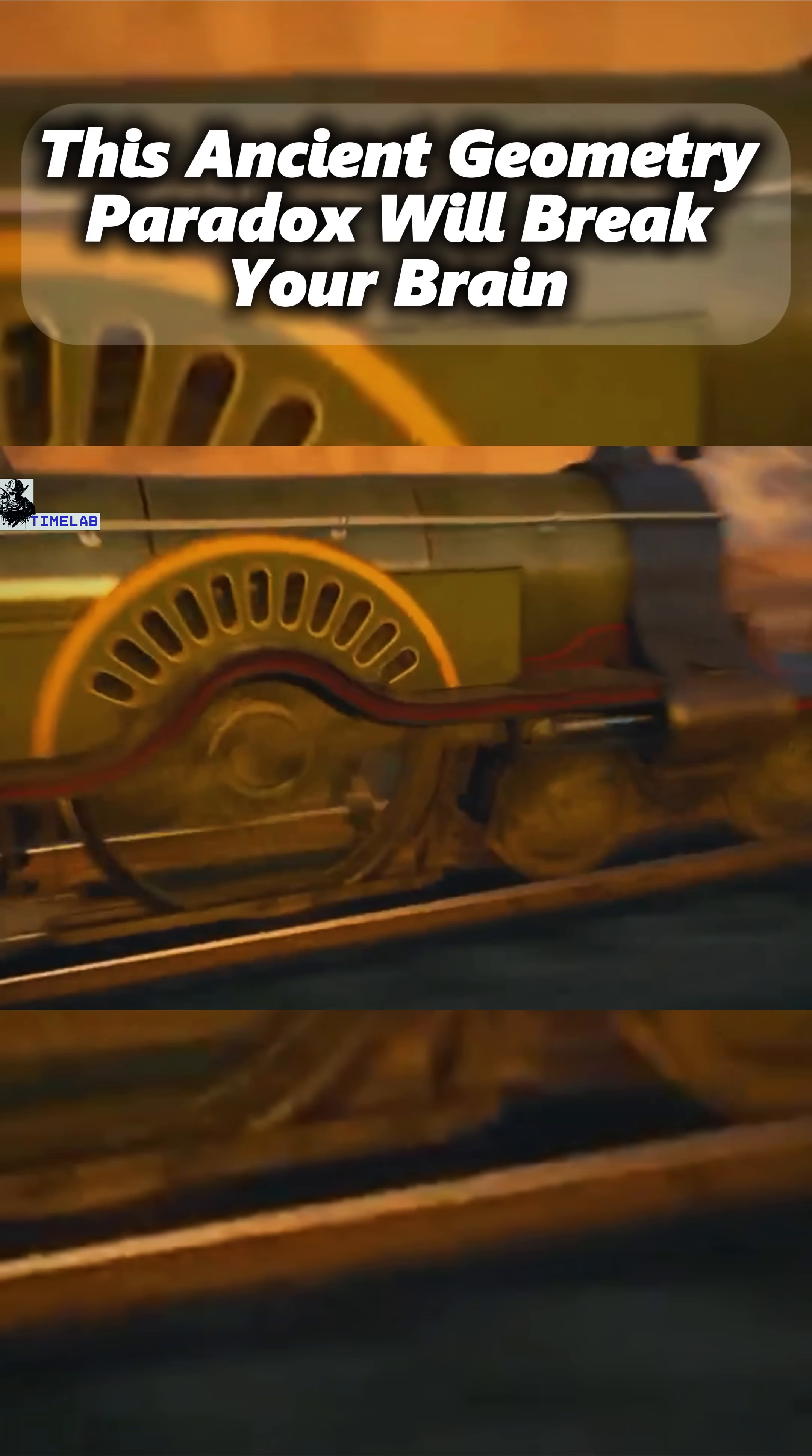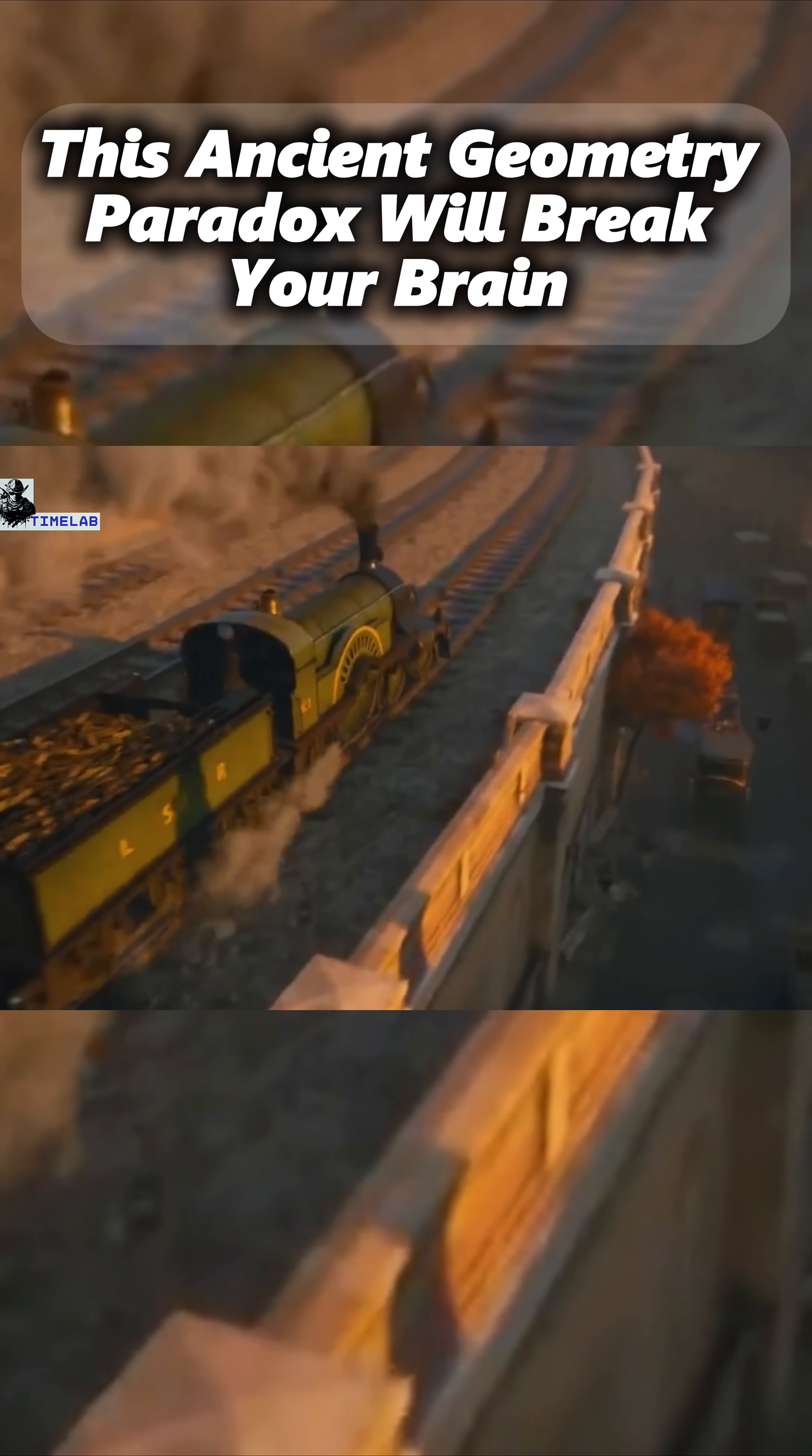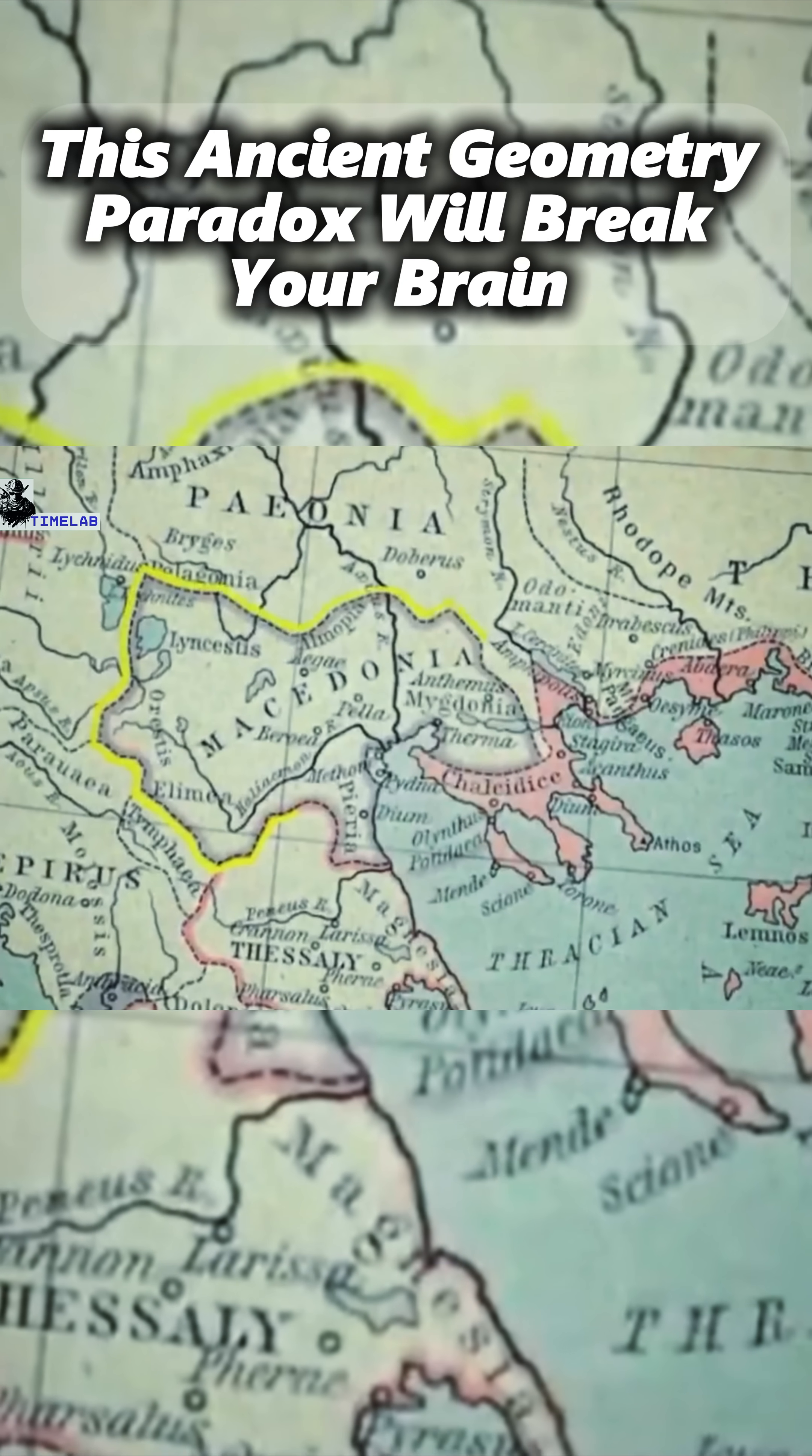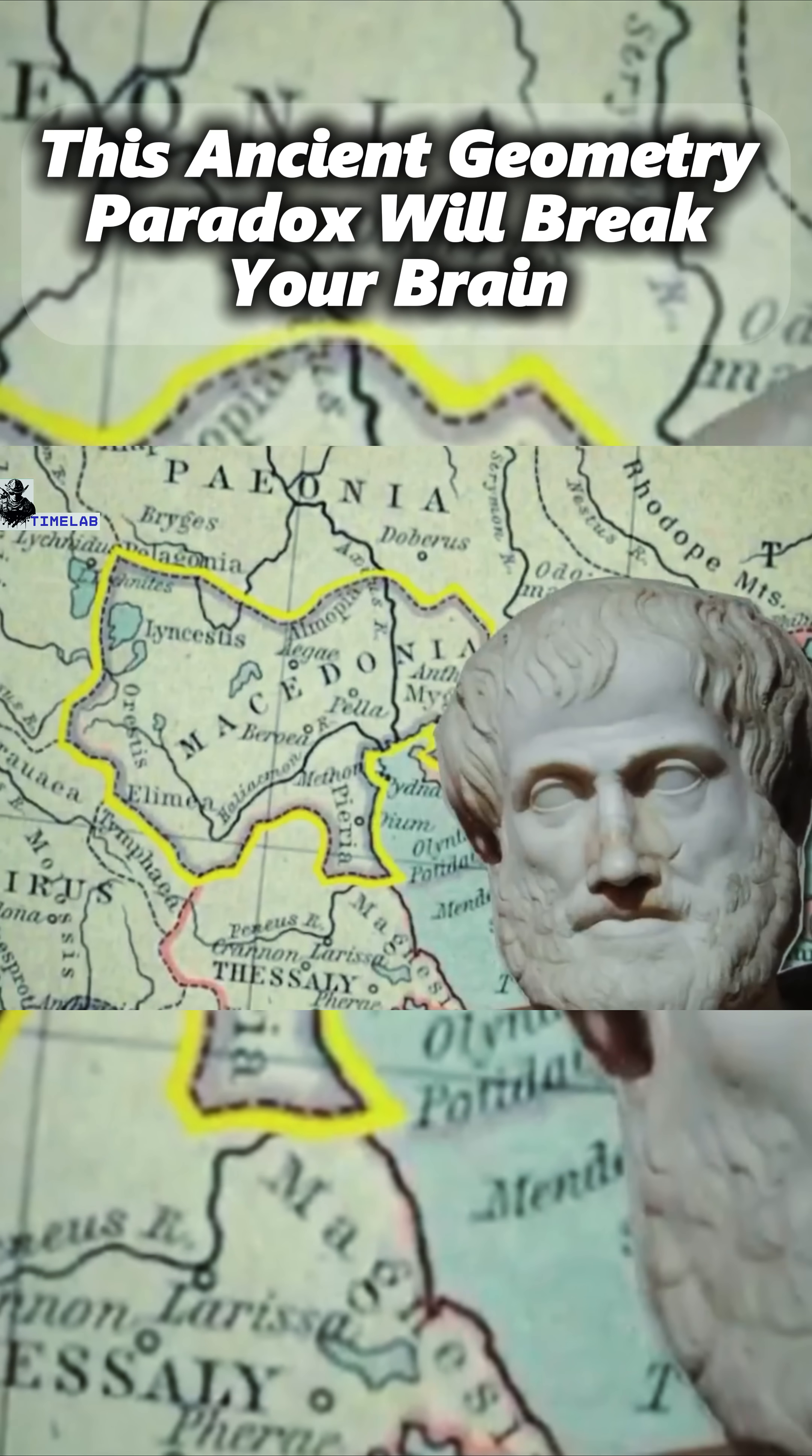The mind-bending wheel paradox, also known as the wheel paradox, was first proposed by the ancient Greek mathematician Aristotle.